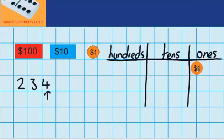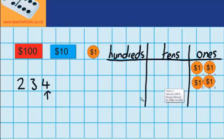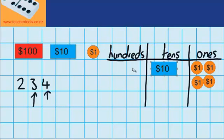There's one, two, three, four. Now if we go back over here, I can see that 234 has got three tens in it. So let's move three $10 notes across. That's one, two, and three.